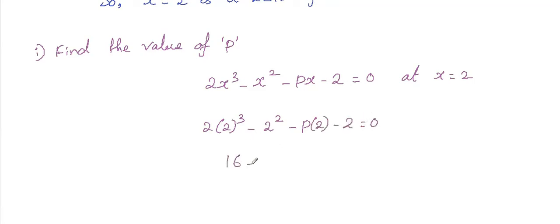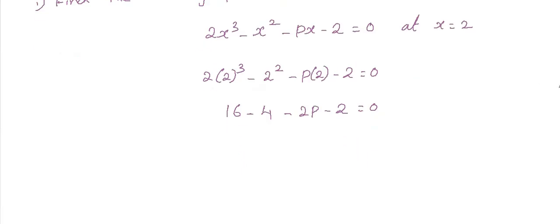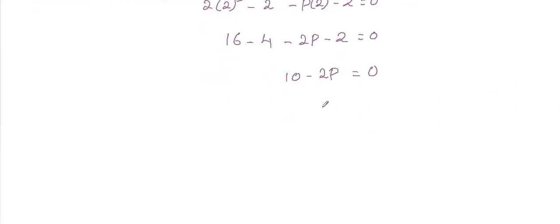So 2 cube into 2 is 16 minus 4 minus 2p minus 2 equals 0. If we simplify this, we get 10 minus 2p equals 0. So 2p equals 10 and the value of p is 5.